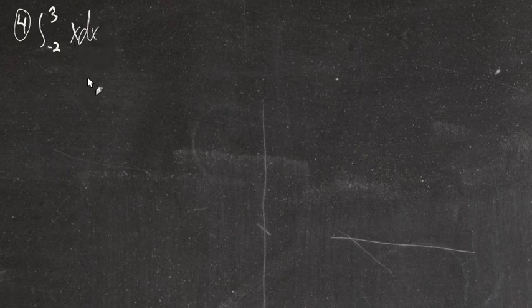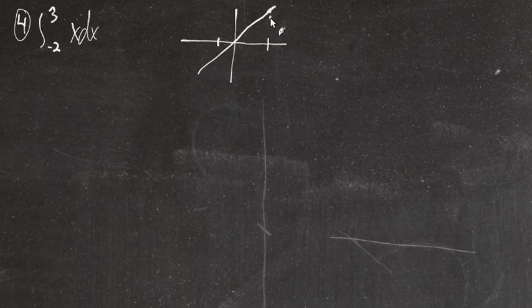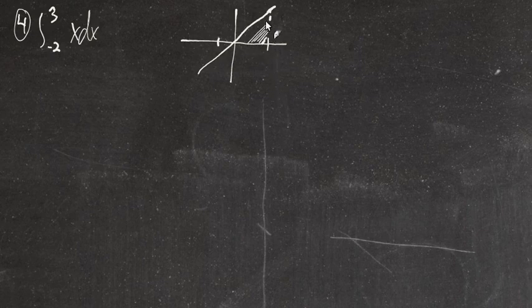Let's start with number 4. I'm going to read this with the correct vocabulary here: the definite integral from negative 2 to 3 of x dx. Let's picture this function with a graph — it's going to be a line with a slope of 1, and we're going to look at it from negative 2 to 3. This is the definite integral, which we can think of as the area under the curve. That definitely applies when the function is positive, when it's above the x-axis.